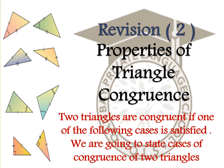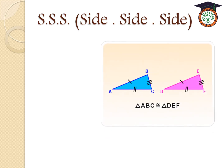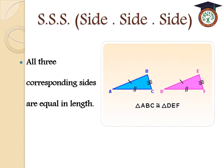The first case is SSS, which means Side-Side-Side: all three corresponding sides are equal in length. If we have two triangles like what's shown here — triangle ABC and triangle DEF — these two triangles are congruent when the three corresponding sides are equal. What is the meaning of corresponding sides?